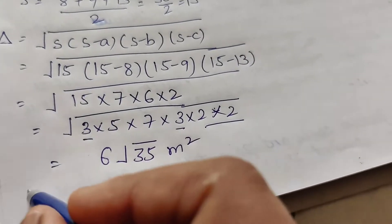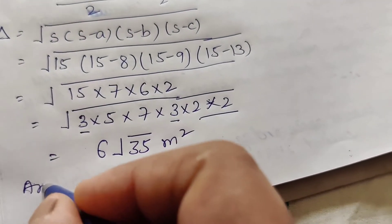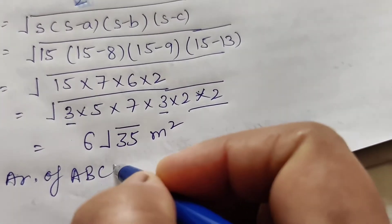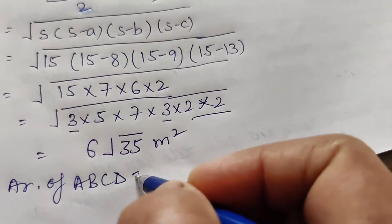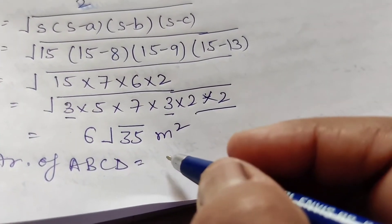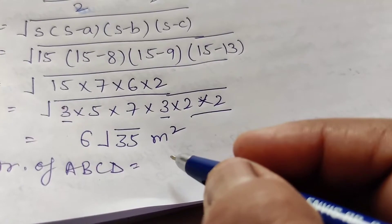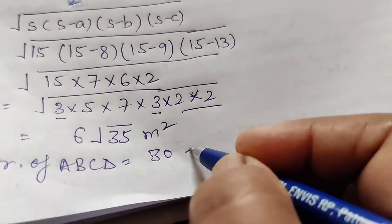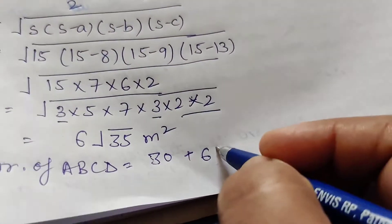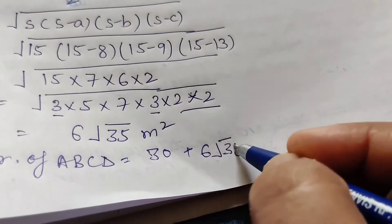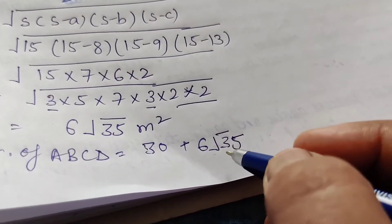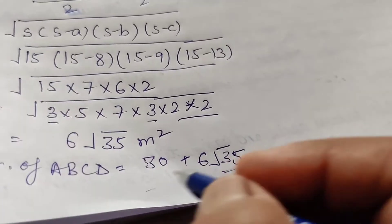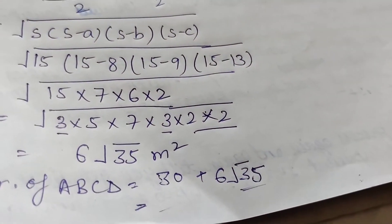Then the area of quadrilateral ABCD equals area of triangle ABD plus area of triangle BCD, which is 30 plus 6 root 35 meter square. You can solve root 35 and multiply to get the final answer.